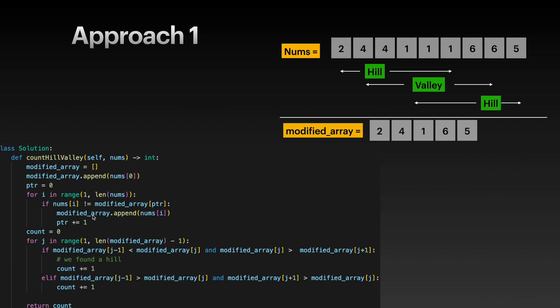If they are not equal, then we append whatever number we are currently on in our nums array to our modified_array, and then we move our pointer by one.